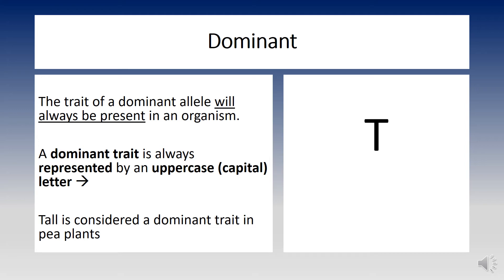The trait of a dominant allele will always be present in an organism. A dominant trait is always represented by an uppercase letter. Tall is considered a dominant trait in pea plants.